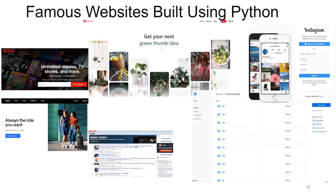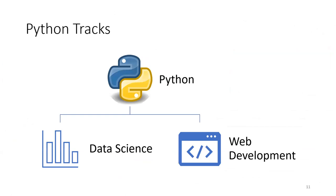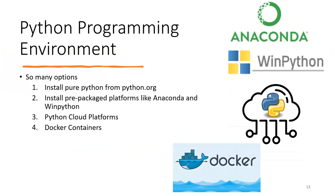So we realize Python is popular and you can have two tracks: web developer or data scientist. Now, for the Python programming environment, you have many options. Option one: install pure Python from python.org and install packages as needed. Option two: use pre-packaged platforms like Anaconda or WinPython. Option three: run Python code on cloud platforms. Option four: use Docker containers.